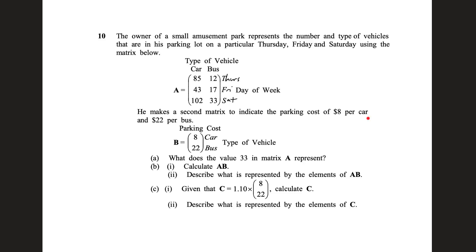Now he makes a second matrix to indicate the parking cost: $8 for a car, $22 to park a bus. Makes sense. Part A: What does the value 33 in matrix A represent? So we've already seen, yeah, 33 is the number of buses in the parking lot on Saturday.